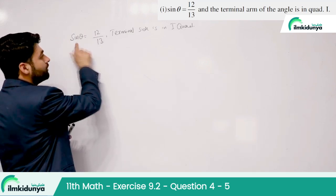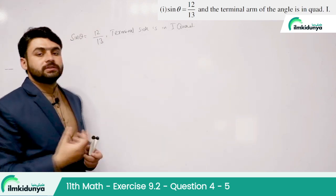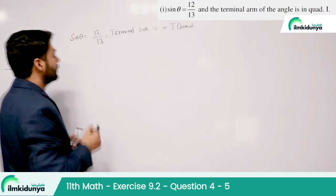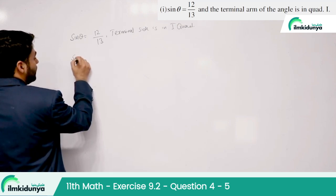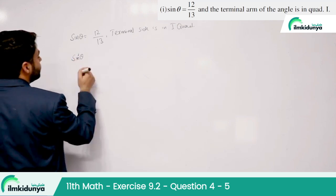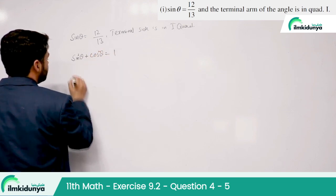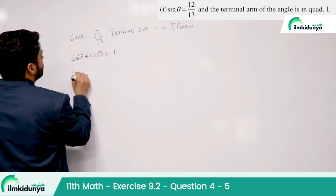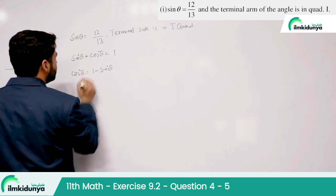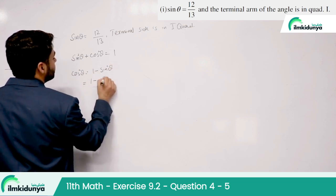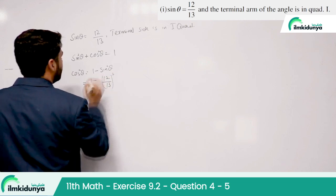Here we have sin θ given, and the terminal side information is that the terminal side is in the first quadrant. So here we have to find cos. We use the identity sin²θ + cos²θ = 1. So cos²θ = 1 − sin²θ = 1 − (12/13)².